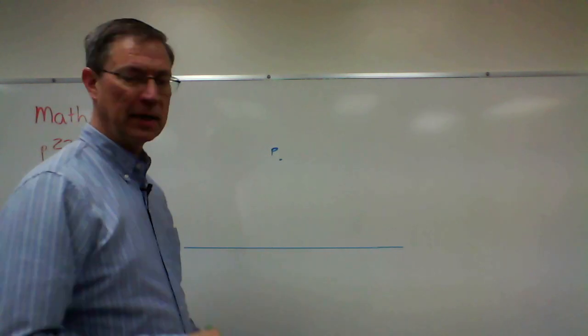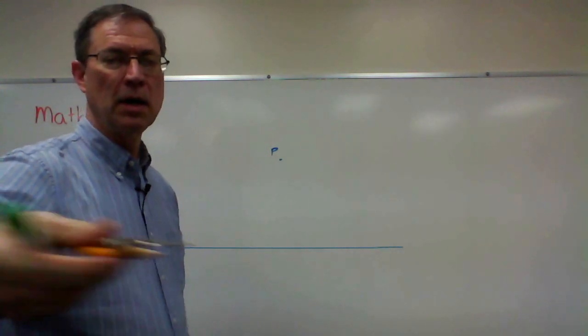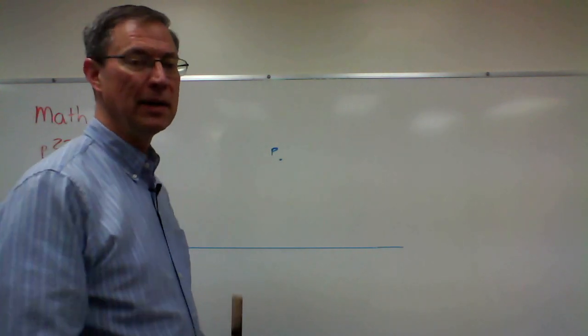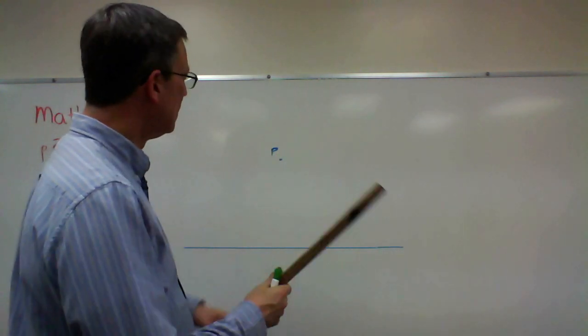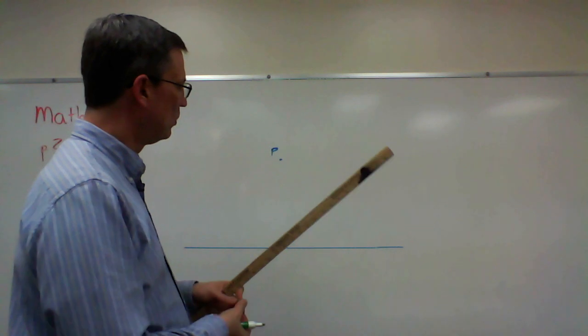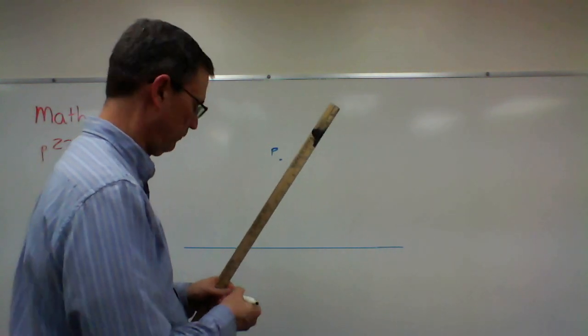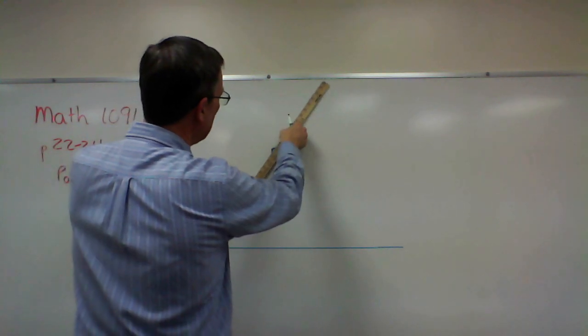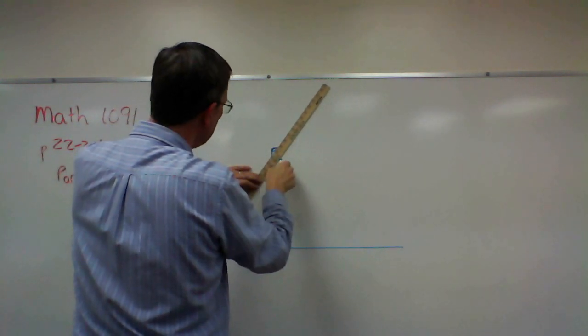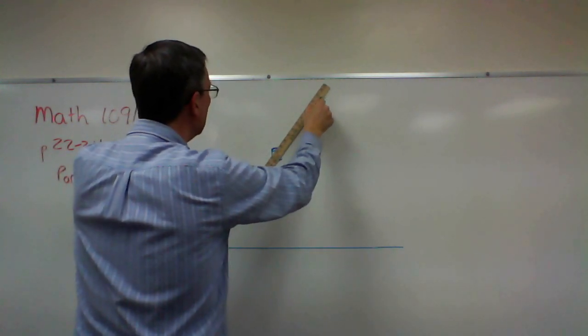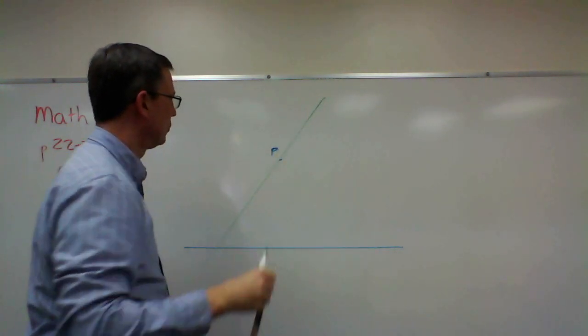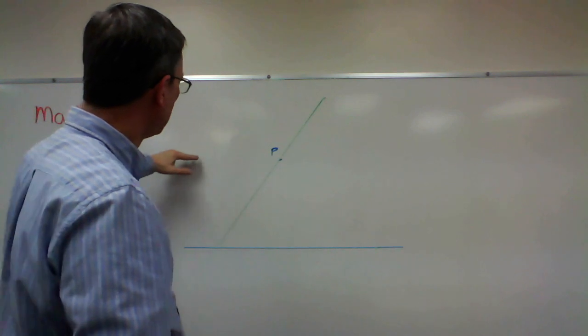Obviously I can't use a compass up here on the whiteboard, but I'll use my string and illustrate the point. So the first step is we're going to draw to this point at an angle to the other line. Now the goal is I want to create a line that comes across right here.